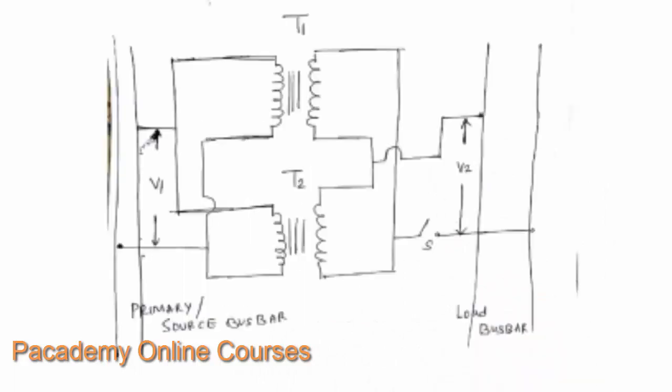In the connection diagram, there are two transformers T1 and T2. The primary windings of each transformer are connected to the source bus bar, with terminals of the same polarity taken together and connected to the positive terminal, while the other two are connected to the negative terminal of the supply. The secondary is sourced out similarly.